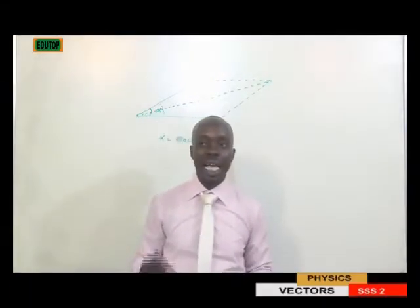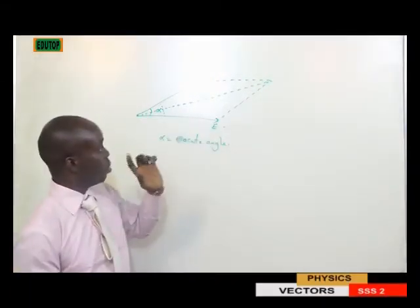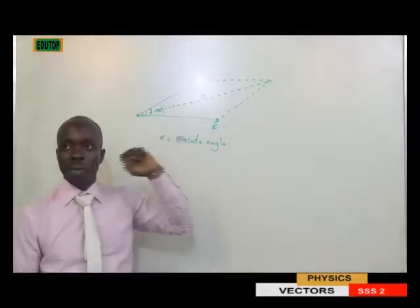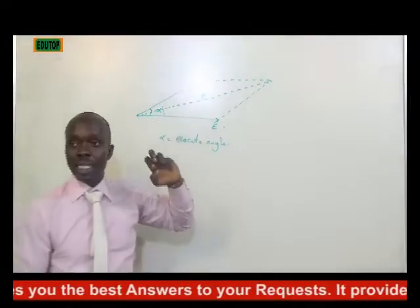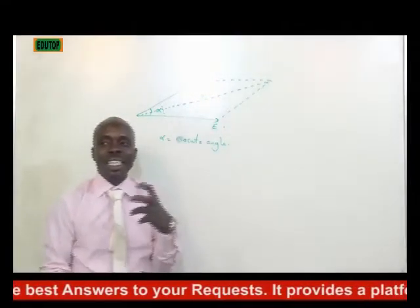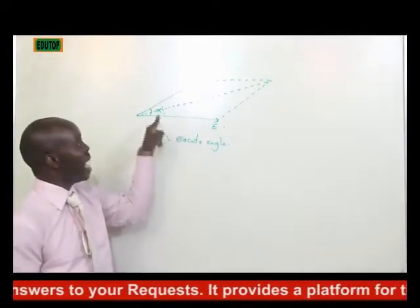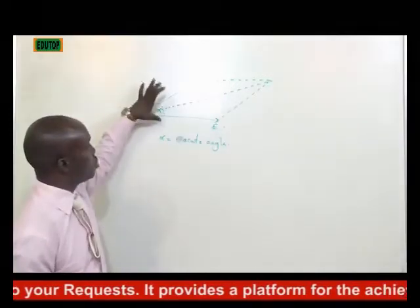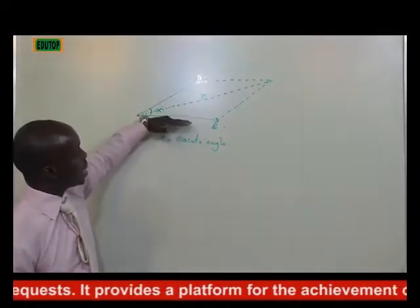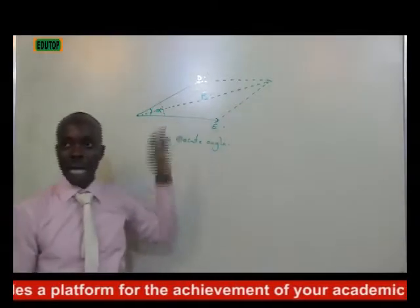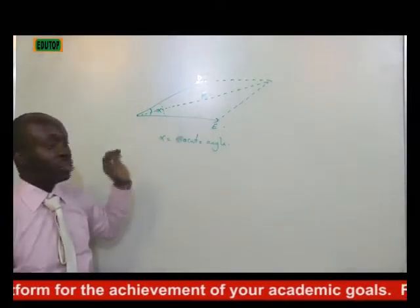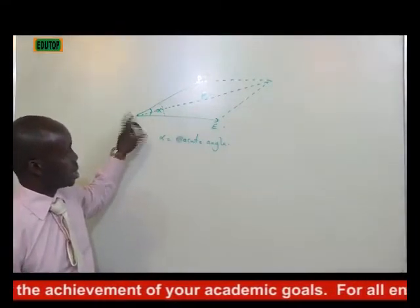The parallelogram law states that if two vectors are represented in magnitude and direction by the adjacent sides of the parallelogram, the resultant is represented in magnitude and direction by the diagonal drawn from the common point.